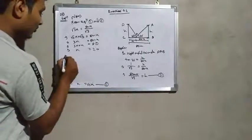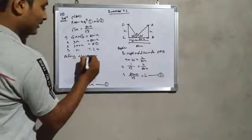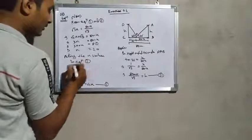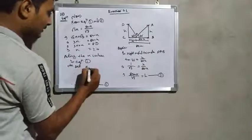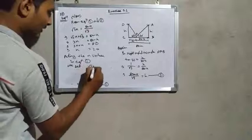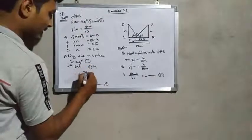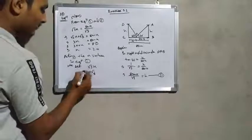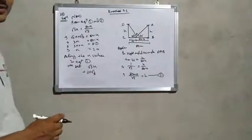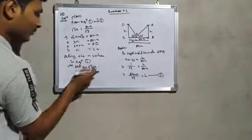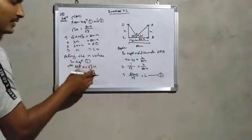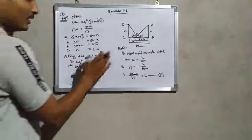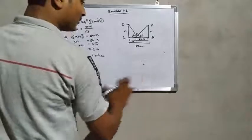Putting the value of x into Equation 1, h = √3·x = √3 × 20 = 20√3. So the height of the poles is 20√3 meters.